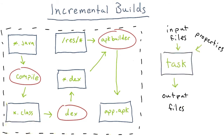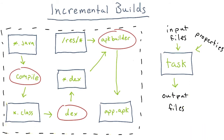Gradle accomplishes this by tracking each task's inputs and outputs. Before each task is run, Gradle saves a snapshot of the inputs used by the task. If that particular task doesn't have any snapshots of its input yet, or if the inputs have changed, then Gradle will run the task again. Gradle additionally saves a snapshot of the outputs created by this task. The next time Gradle goes to run the same task, it compares the inputs to the snapshot it saved earlier.